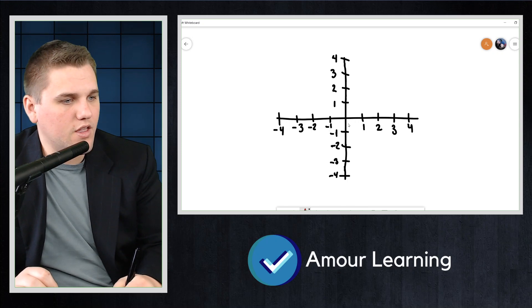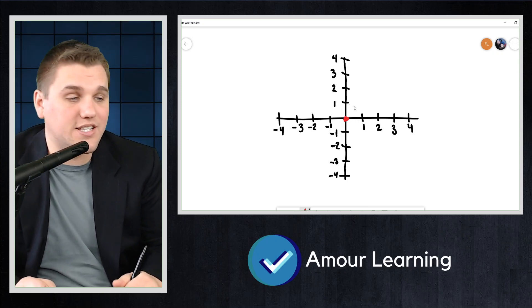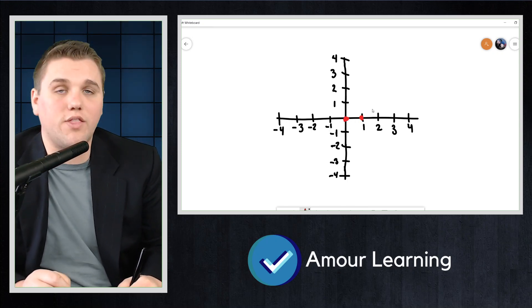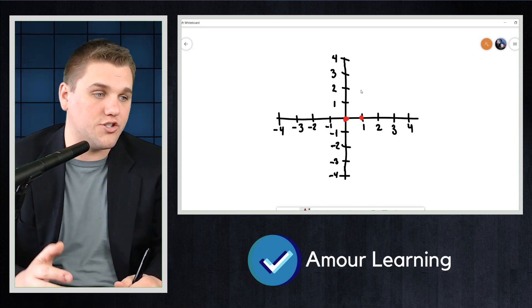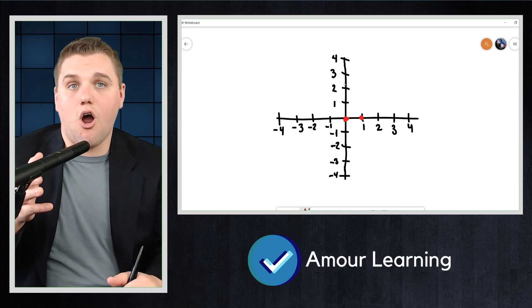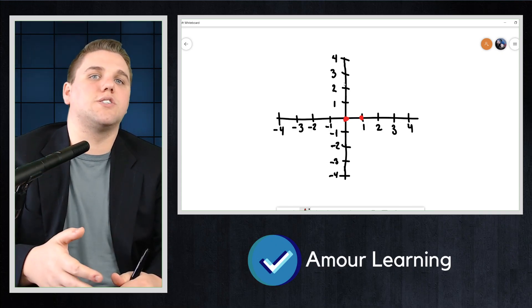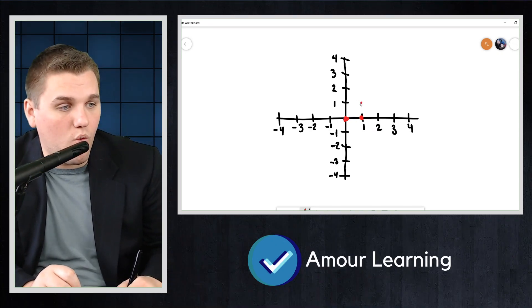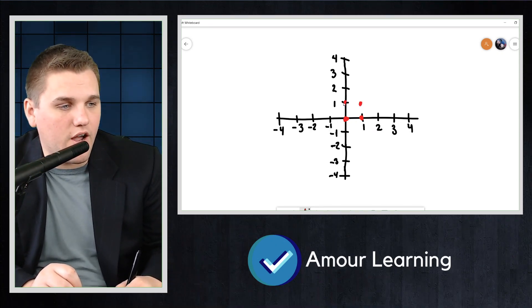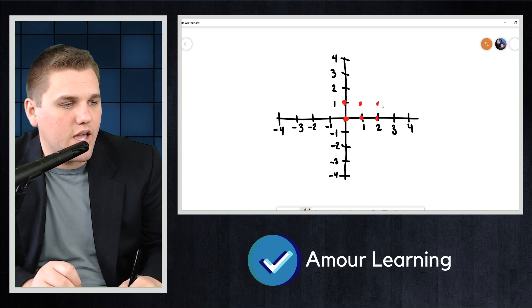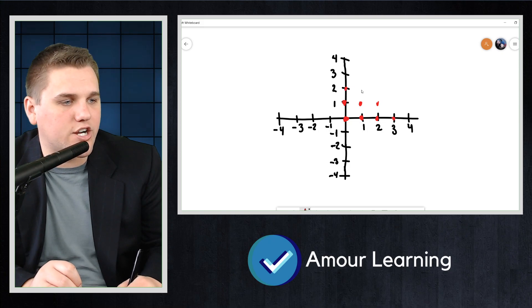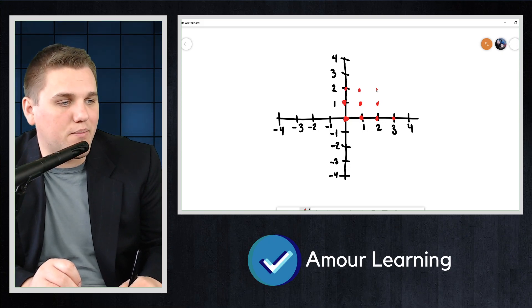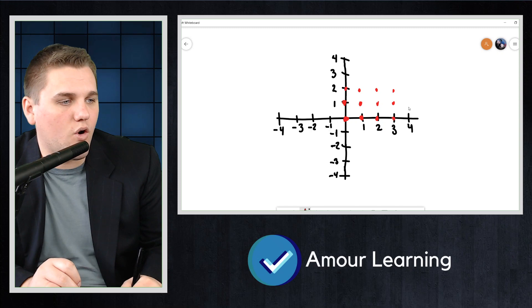So for example, this point right here is on the lattice. This point right here is also on the lattice because both coordinates are integers. Zero, zero and one, zero are both points with coordinates that are integers. Another one is one comma one right there. That's another point on the lattice. And so if you notice, you can think of the intersections on that graph paper that you probably have or have seen before. So these are all the points on the lattice.